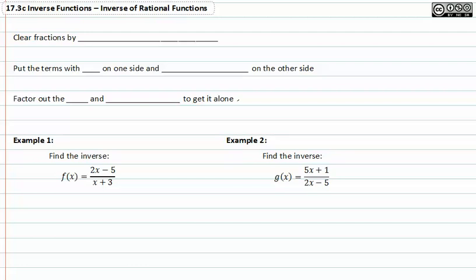When we need to find the inverse of rational functions, we clear fractions by multiplying by the LCD. Put the terms with y on one side and everything else on the other side. Factor out the y and divide to get it alone.